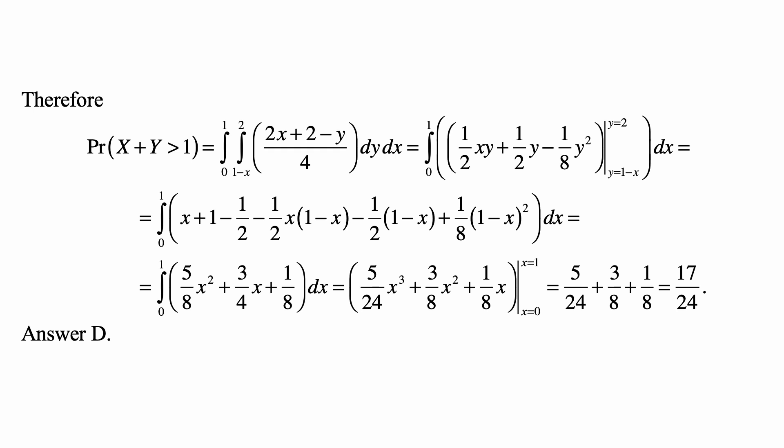And for every value of x between 0 and 1, y runs from 1 minus x to 2. So we simply take the integral from 0 to 1 of the integral from 1 minus x to 2 of the joint density, which is (2x + 2 - y)/4. And we take the integral with respect to y first, y running from 1 minus x to 2, and then with respect to x.